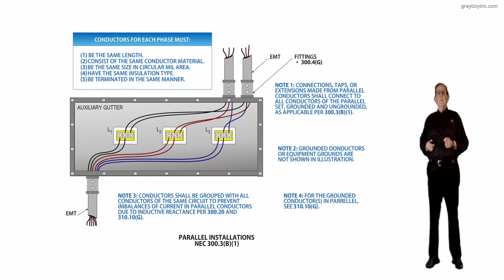If you notice from the tap can in the illustration, the auxiliary gutter L1, notice that we pull that L1 in both conduits. For L2, we pull both those conductors in each conduit. And for L3, we pull those conductors in each conduit.